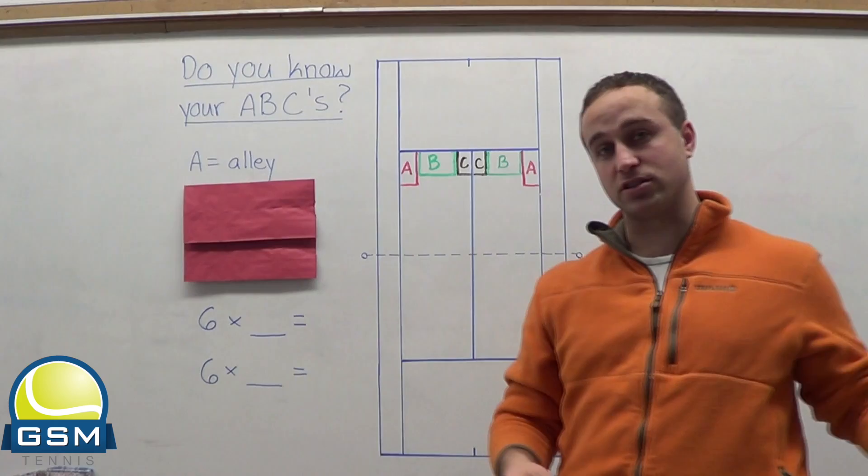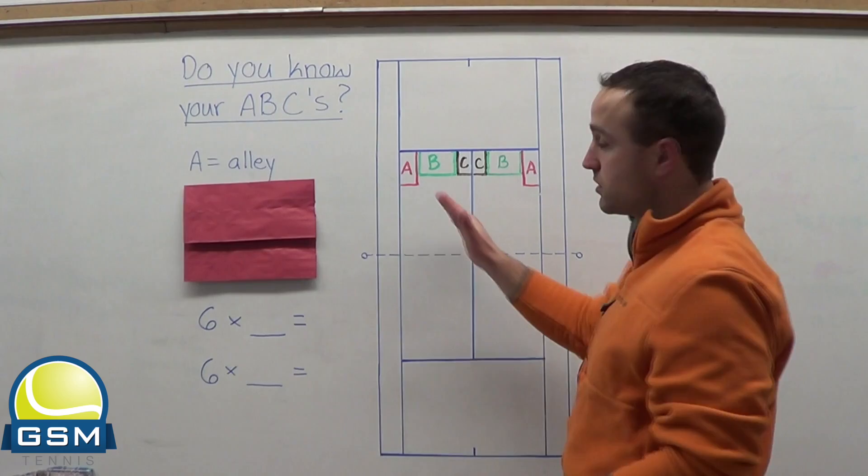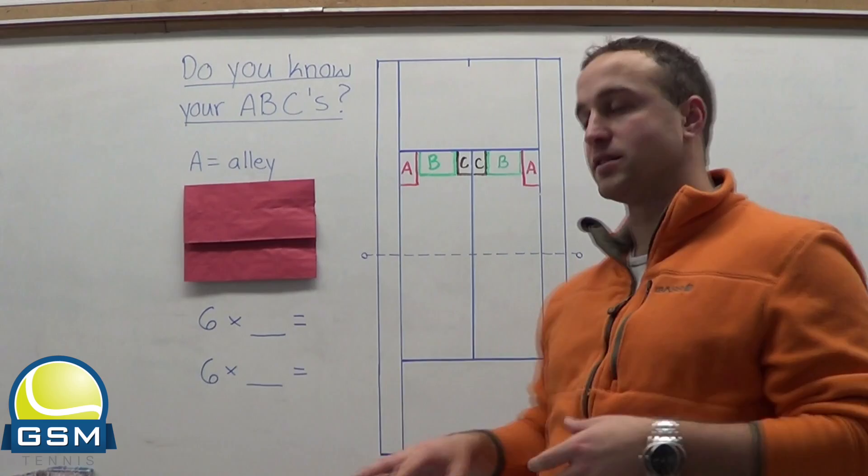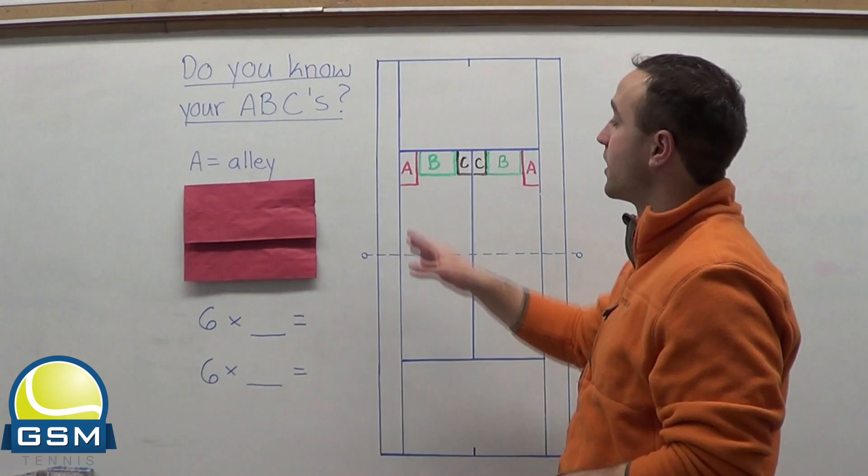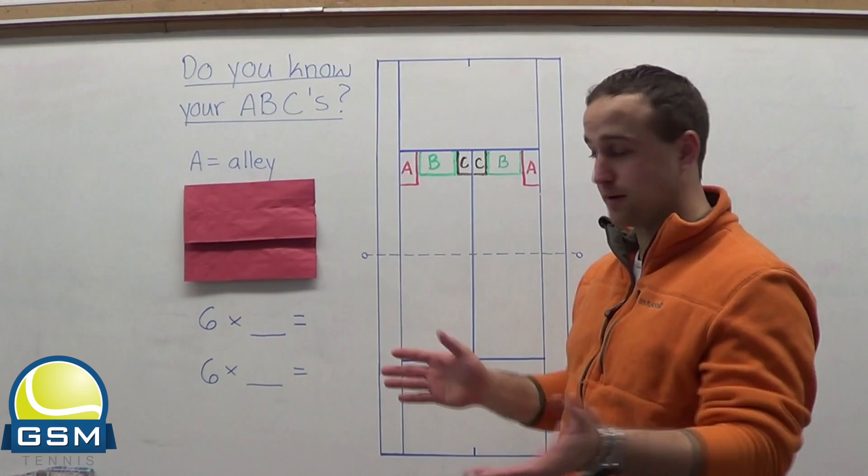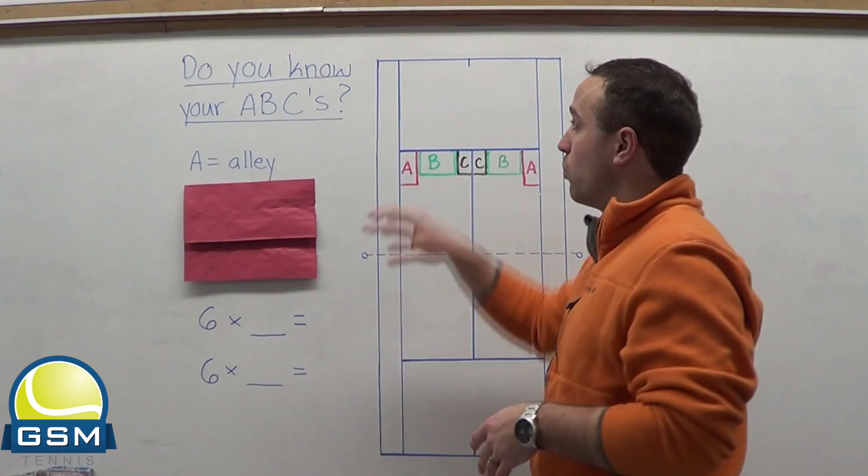So I have the situation here where you're serving on the deuce side or on the ad side. And you can see where the A is. The A is always on the outside of the service box, closest to that single sideline. So here I have it on the deuce side, and here I have it on the ad side. Again, those are out wide serves, making your opponent reach for the ball, getting off of the court, so that way you can take advantage right away.